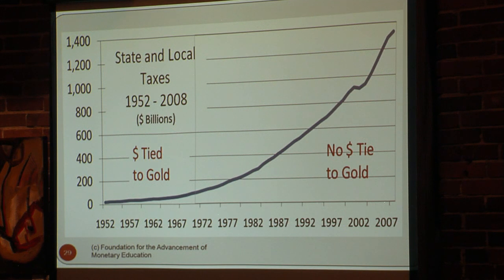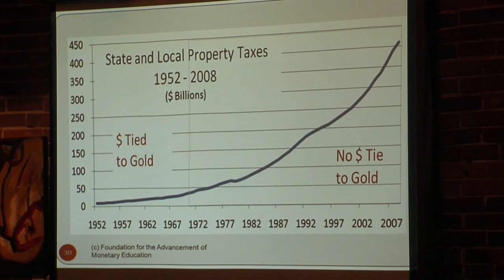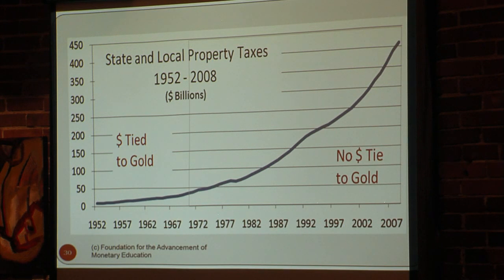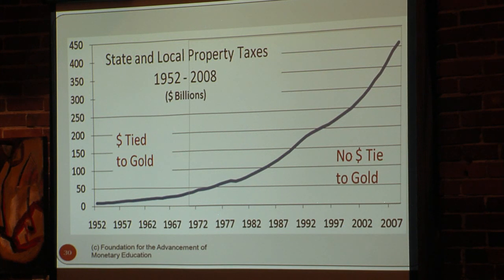Look at what happened to state and local taxes after the last tie to gold — the whole thing just took off, and a big component of that is property taxes. Today they're collecting something like 400-plus billion dollars in property taxes. Property taxes are a real drag on retired people with fixed income, and today we have something like 80 million baby boomers about to retire. A lot of these folks are going to be forced out of their homes.